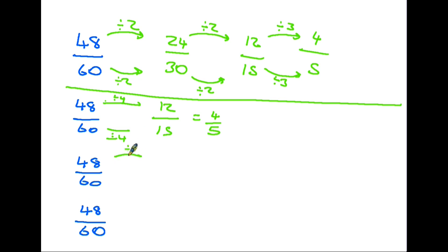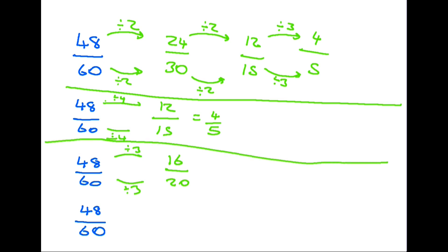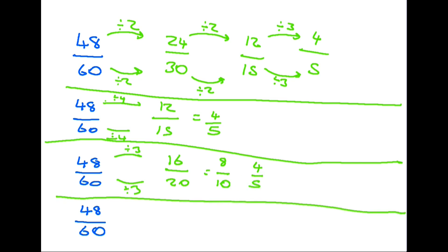You might also decide both numbers divide by three: 48 divided by three is 16 and 60 divided by three is 20. From 16 over 20, divide by two to get 8 over 10, then divide by two again to get four fifths. Or, if you're good at your times tables, you might spot that 48 and 60 are both in the twelve times table — divide by twelve directly: 48 divided by 12 is four and 60 divided by 12 is five — straight to four fifths in one step.